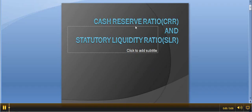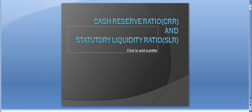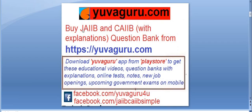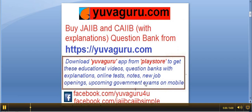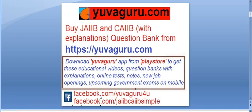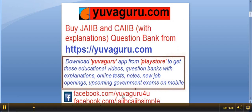Hi friends, let's study CRR and SLR today. Before going there, you can buy this JIB and CIB question bank for all subjects from the website uvaguro.com. You can also download the app from the Play Store to get educational videos, question banks with explanations, online tests, notes, new job openings, etc. on your mobile. You can read or hear it on the go. You can also follow us on Facebook at uvaguro4u and JIB CIB simple.